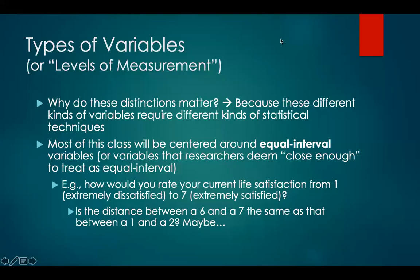So why do these distinctions matter? Because there are different kinds of variables and each one requires different kinds of statistical techniques. Most of this class will be centered around equal interval variables, or variables that researchers deem close enough to treat as equal interval — for example, rating your current life satisfaction from 1 (extremely dissatisfied) to 7 (extremely satisfied). You can question whether the distance between 6 and 7 is the same as between 1 and 2, but generally researchers treat these as equal interval even though they might not actually be. That is the breakpoint for this lecture. I'll be recording a separate video for the lecture two slides, also corresponding to chapter one, where we'll talk about how to display data in graphs and tables.